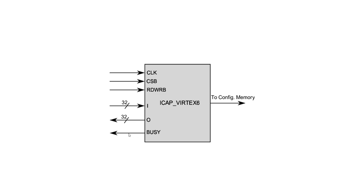The output pin is only valid during read operations; during write operations it will always be low. The interface connects directly to the FPGA configuration memory to configure the fabric. The maximum clock frequency supported by ICAP is 100 MHz, and the interface is 32 bits wide, giving a maximum reconfiguration speed of 400 megabytes per second — much higher than PCAP's approximately 130 megabytes per second.